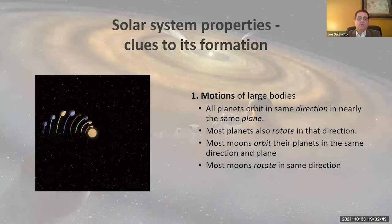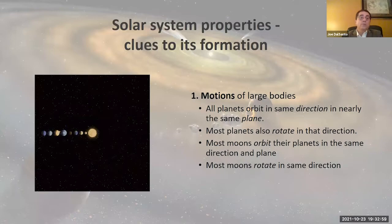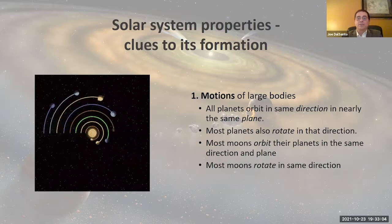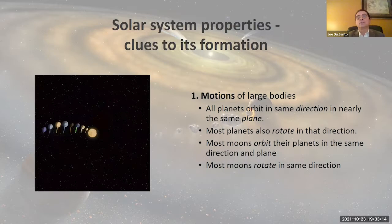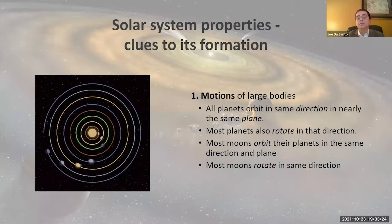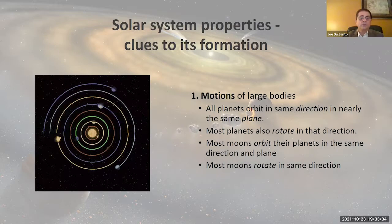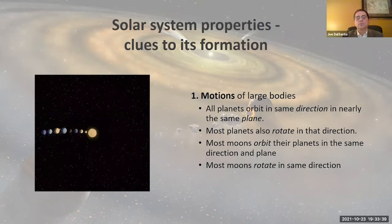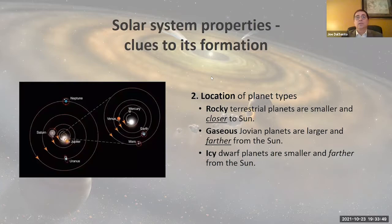Let's begin with the motions of the large bodies in the solar system. Here you see a little animation showing the planets circling around the sun. We take it for granted that the planets orbit in the same direction and in the same plane — my students could tell you that's called the ecliptic. Interestingly, the planets also rotate in that same direction. Looking down at the north pole of the sun, that would be counterclockwise. Even further, the moons orbit their planets in the same direction and plane, and those moons rotate in the same direction with only very few exceptions. This is not random motion — there's a measure of order here that is significant.